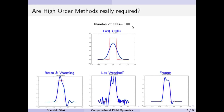As we increase the number of cells we get less diffused, more accurate solutions. So why not take that approach? That is the question we would like to answer today, and also how to overcome the oscillations which arise in the solution.